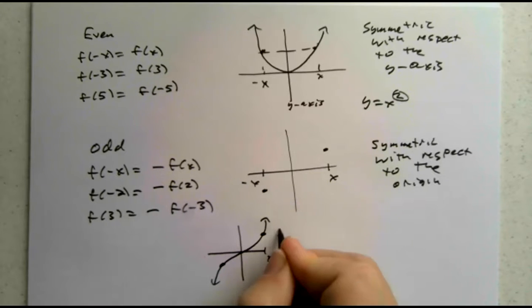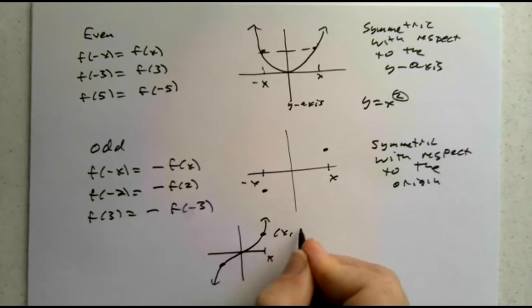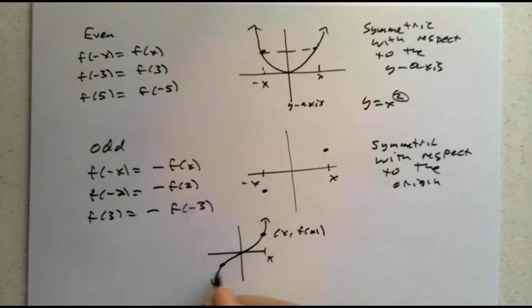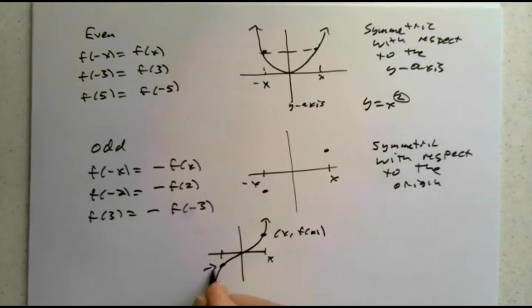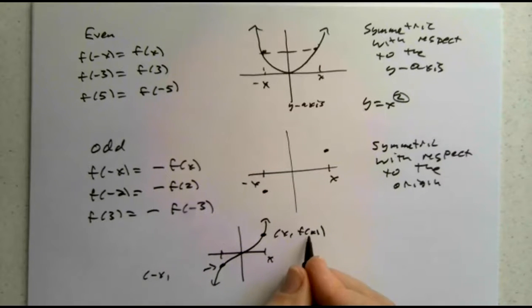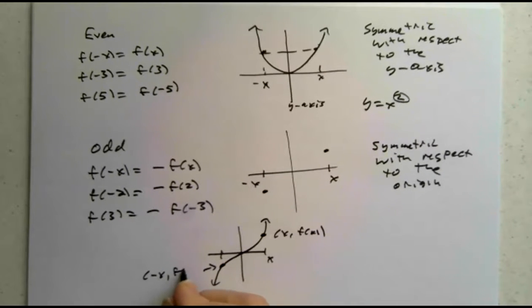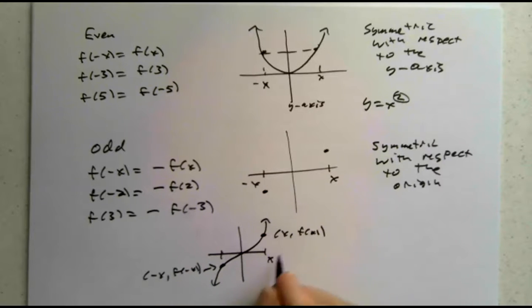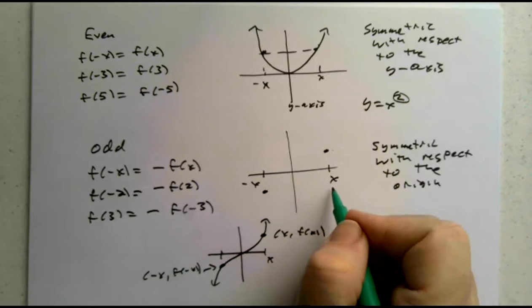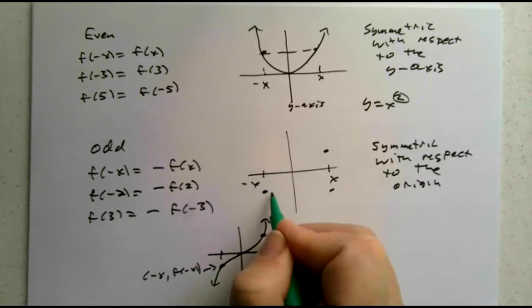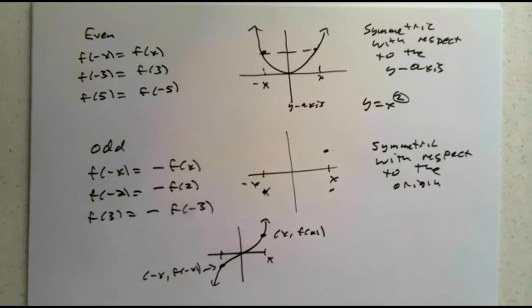Our standard version of an odd function would be x cubed, or even just y equals x. You'll notice there's x and f of x is up there; there's negative x — it's the same distance from the axis, but it's negative. Here's x and the value for f of x. Down here, this is negative x, but f of negative x is the same as the opposite of f of x. f of negative x is negative; f of x is positive here. That's our odd function. You think of folding it twice — fold first over the x-axis and then over the y-axis and they match.